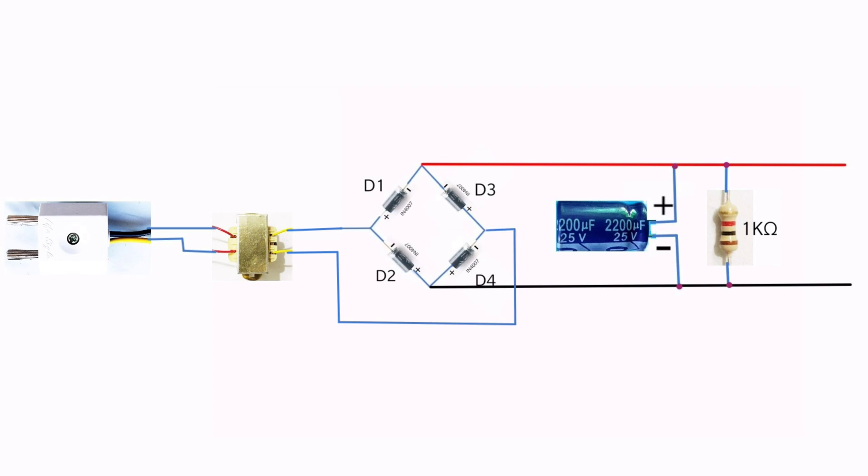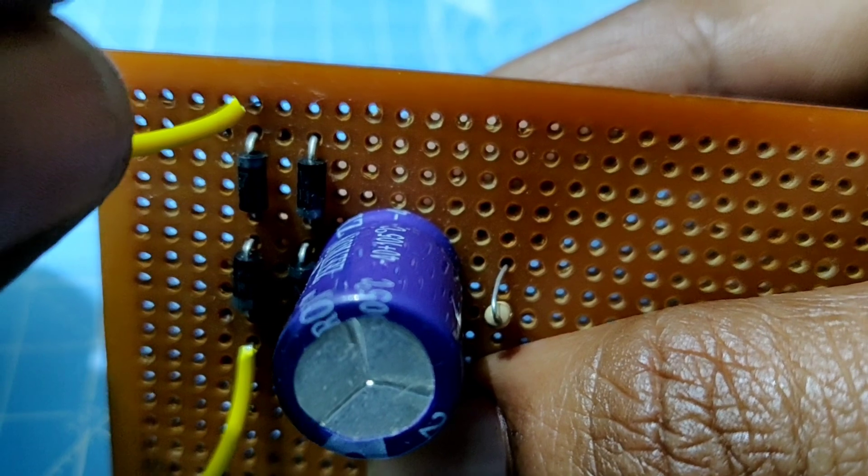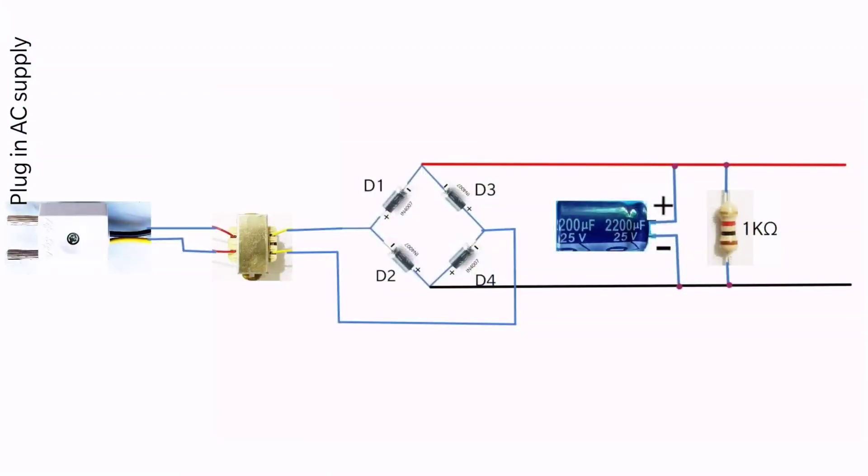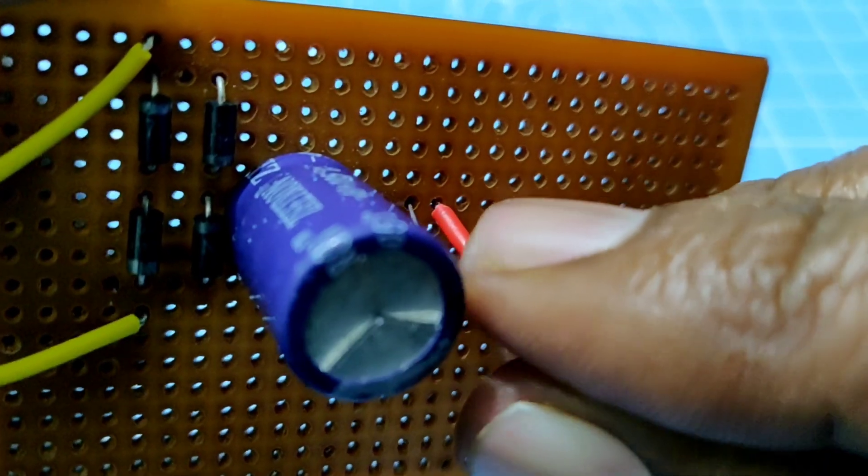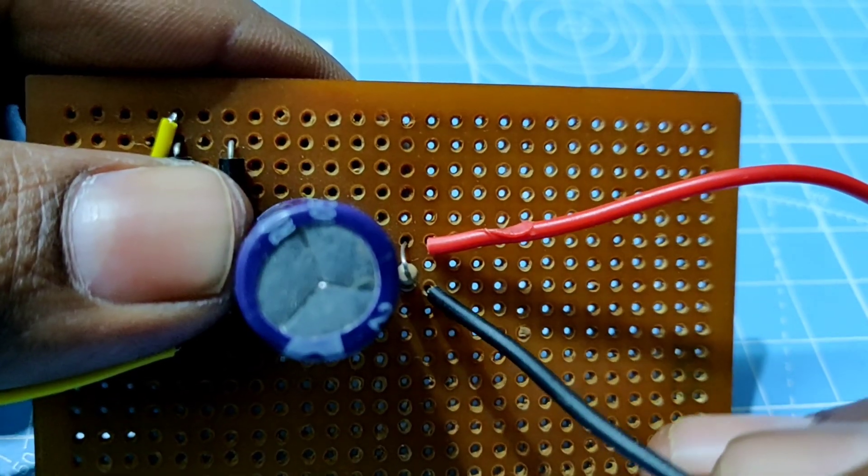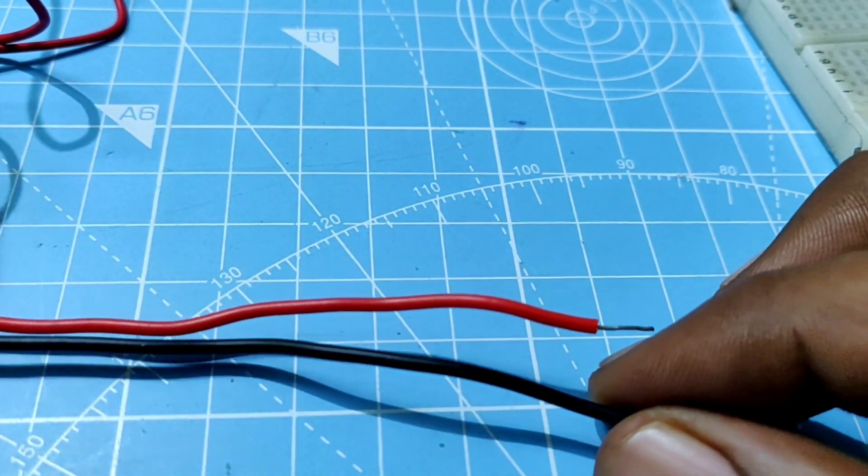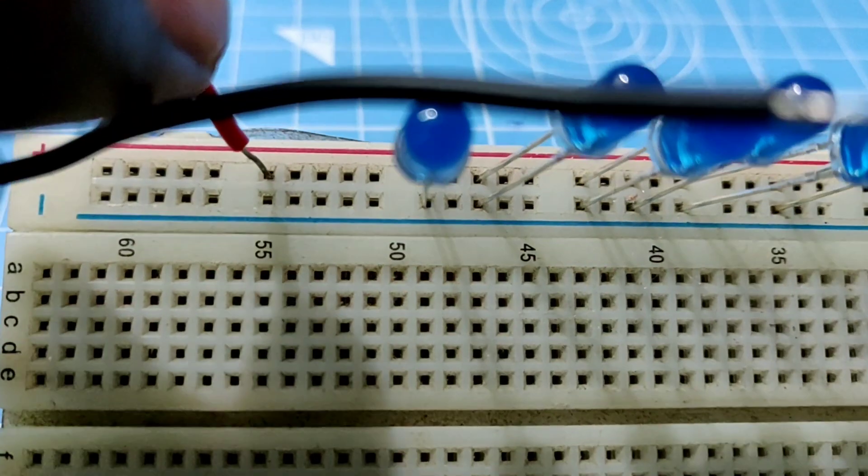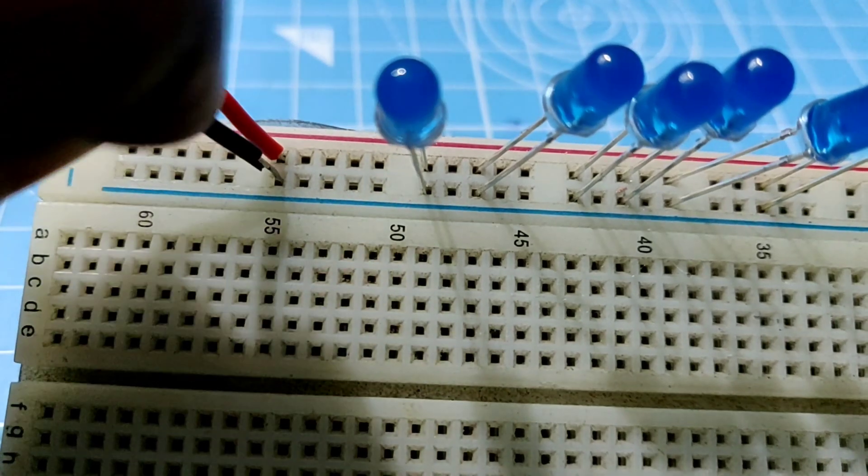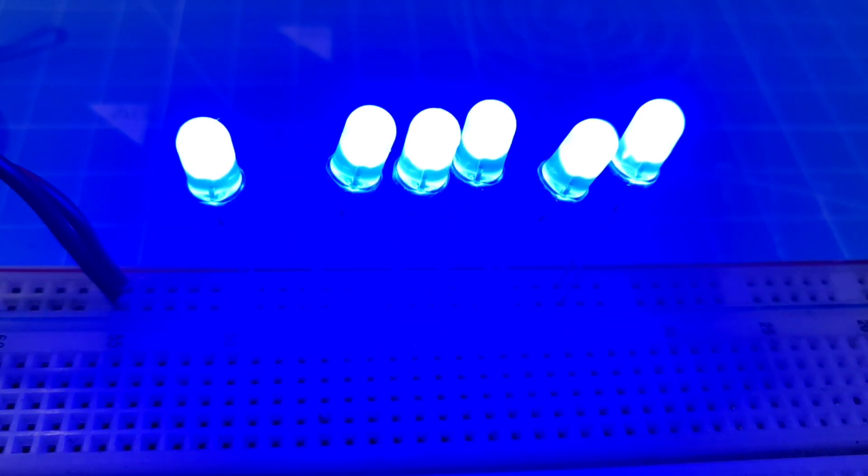Connect the output terminals of the transformer across the bridge rectifier. Connect the output pins to the LEDs to check the output. Now you can see the LEDs are glowing.